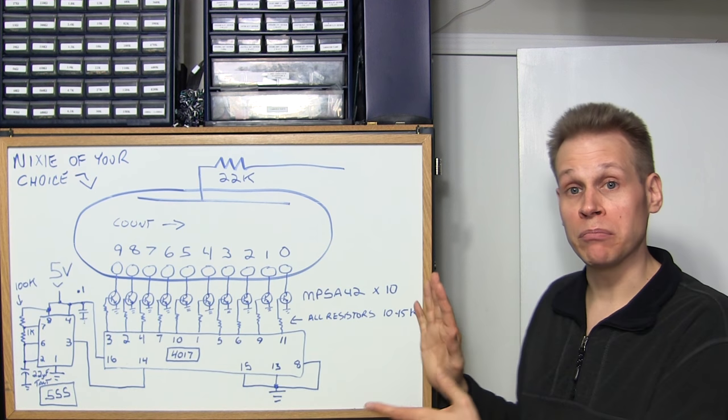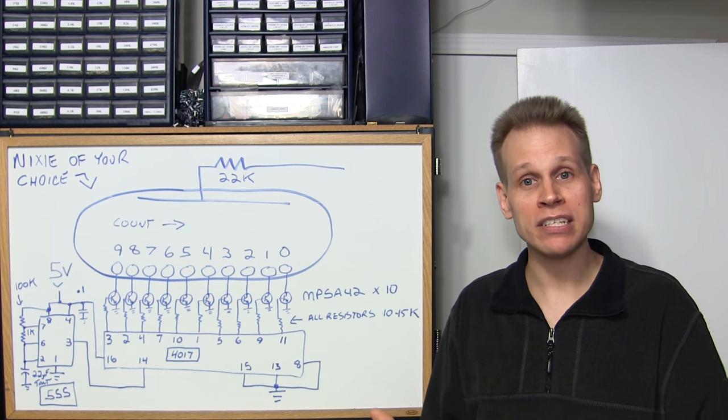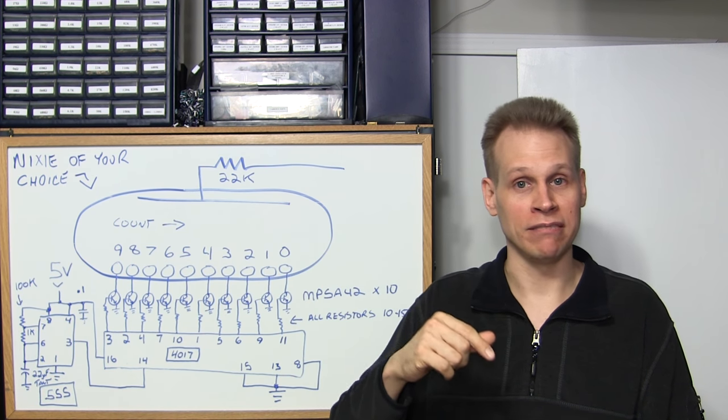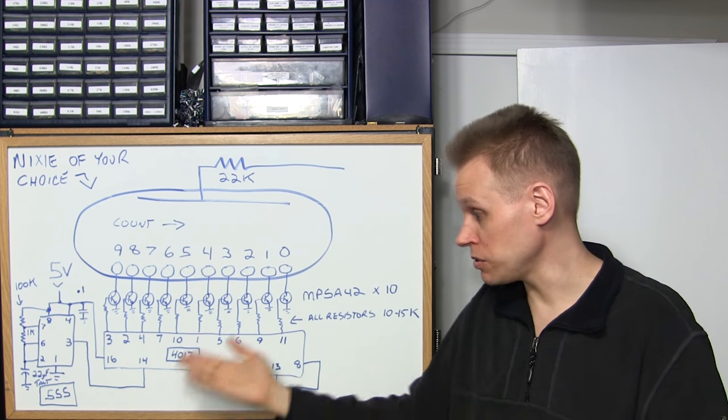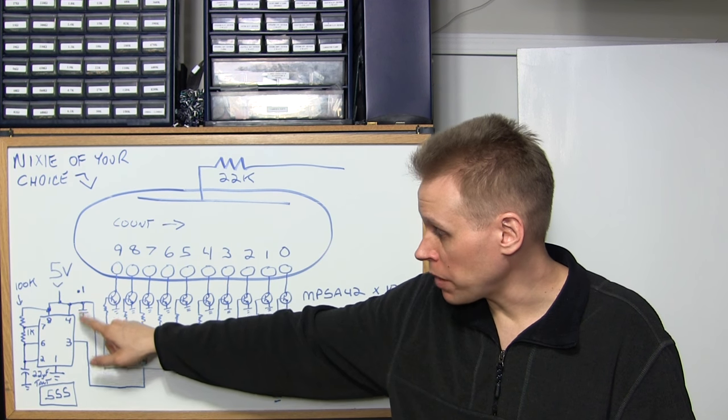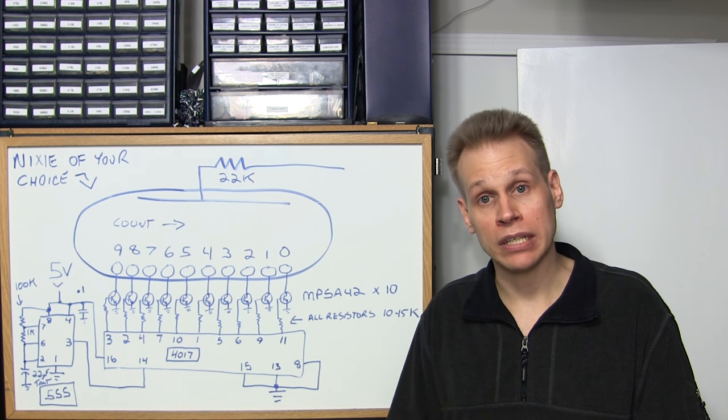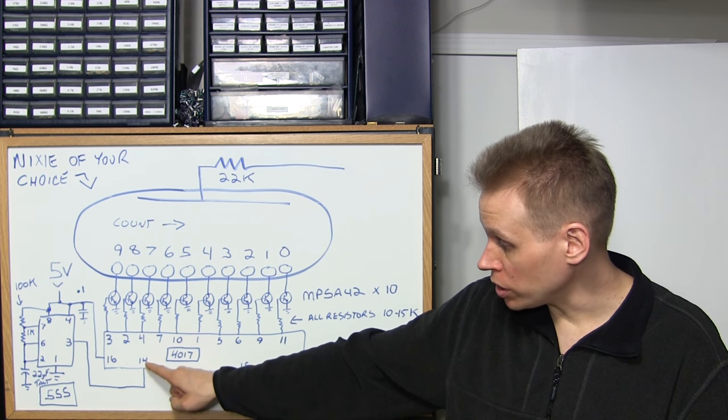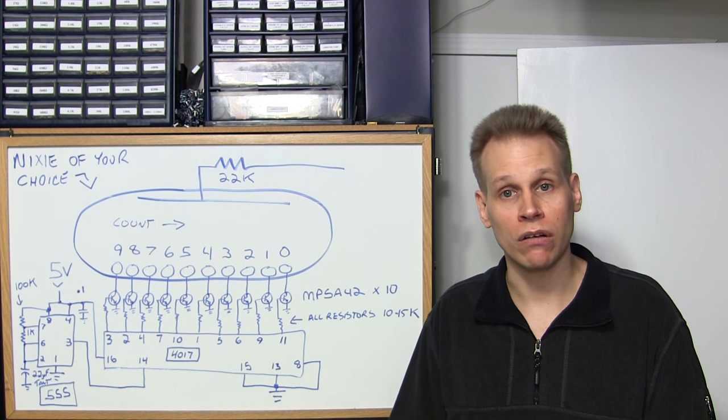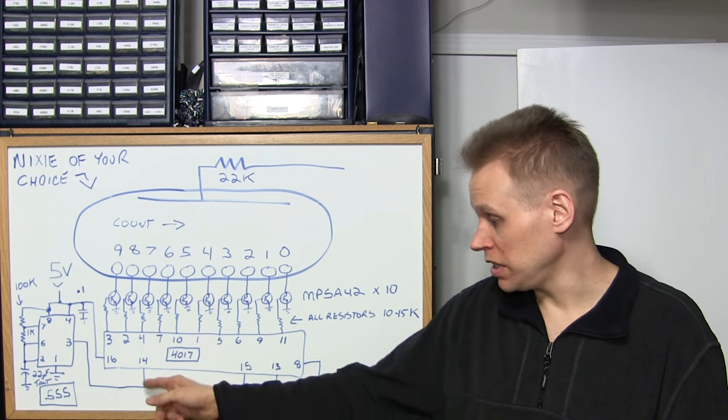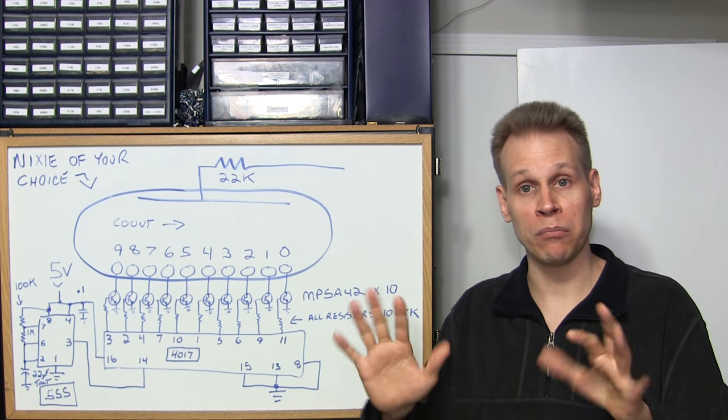You'll have this thing wired up completely right and the number count will just jump all over the place. It'll go 0, 5, 3, 7, 9, 4 randomly because the noise is confusing the IC. So you need a 0.1 capacitor on the supply line and if there's still noise just add a 0.01 microfarad capacitor from pin 14 to ground. I'm keeping the component count to kind of a minimalist thing.